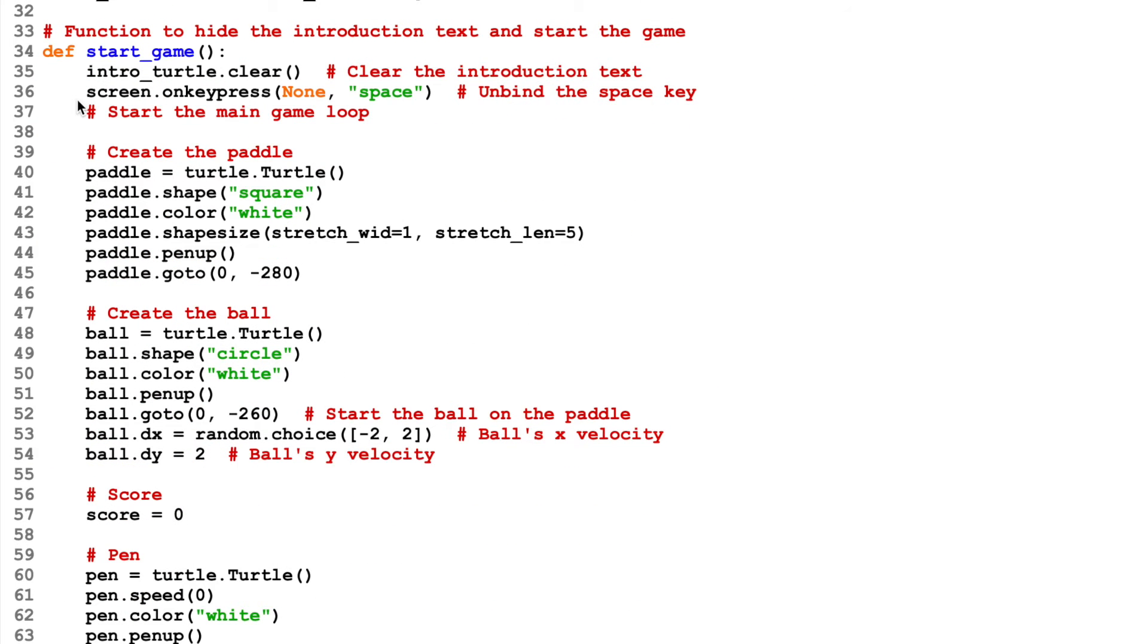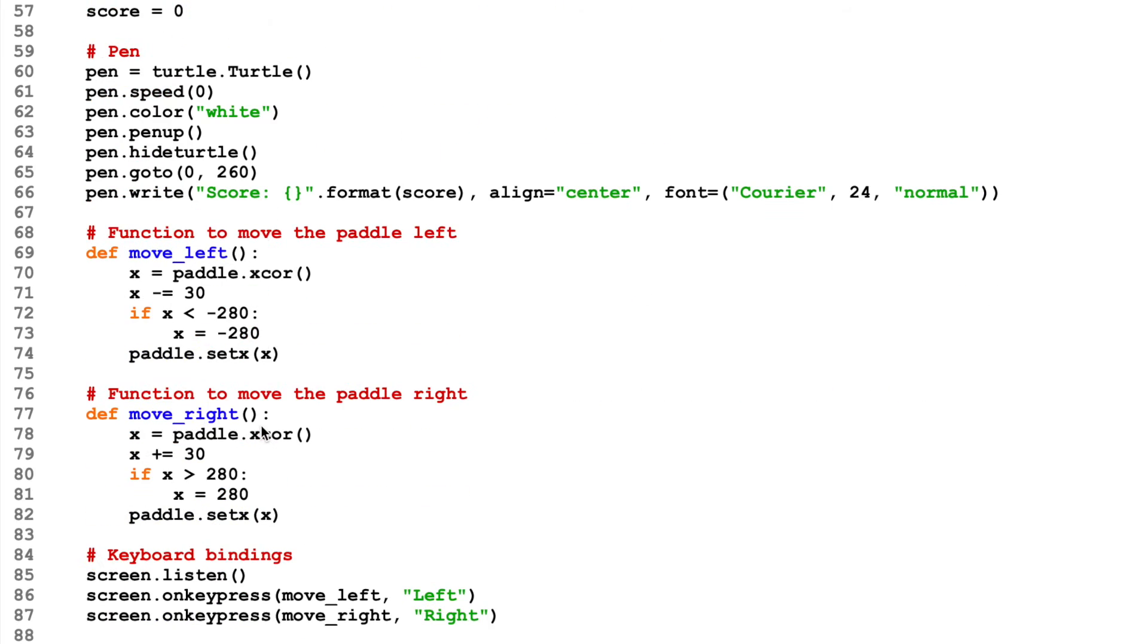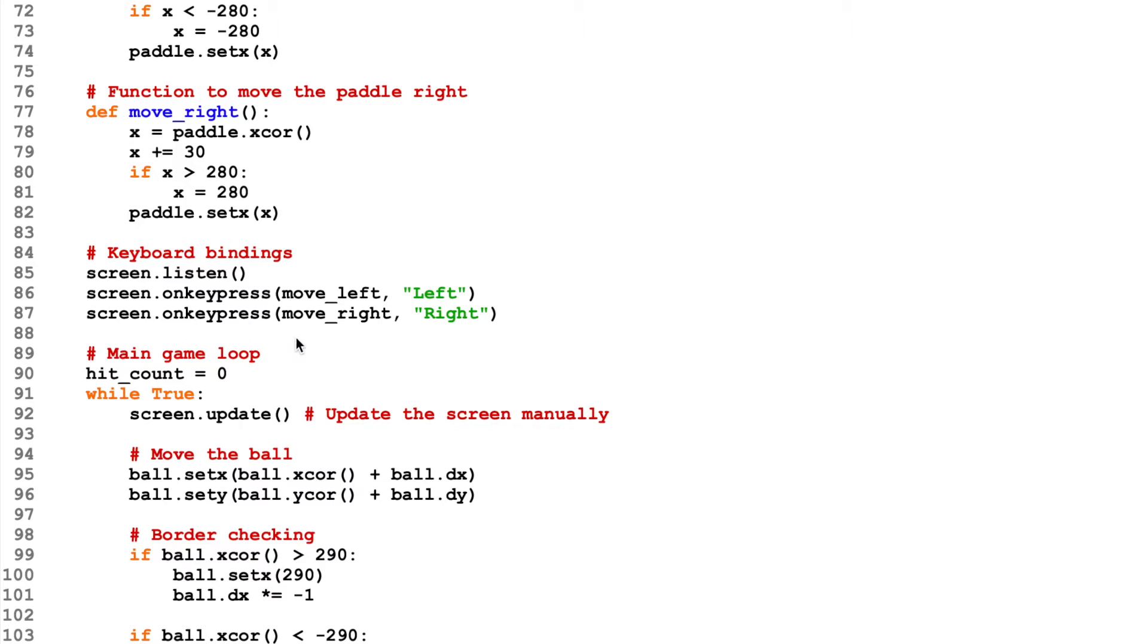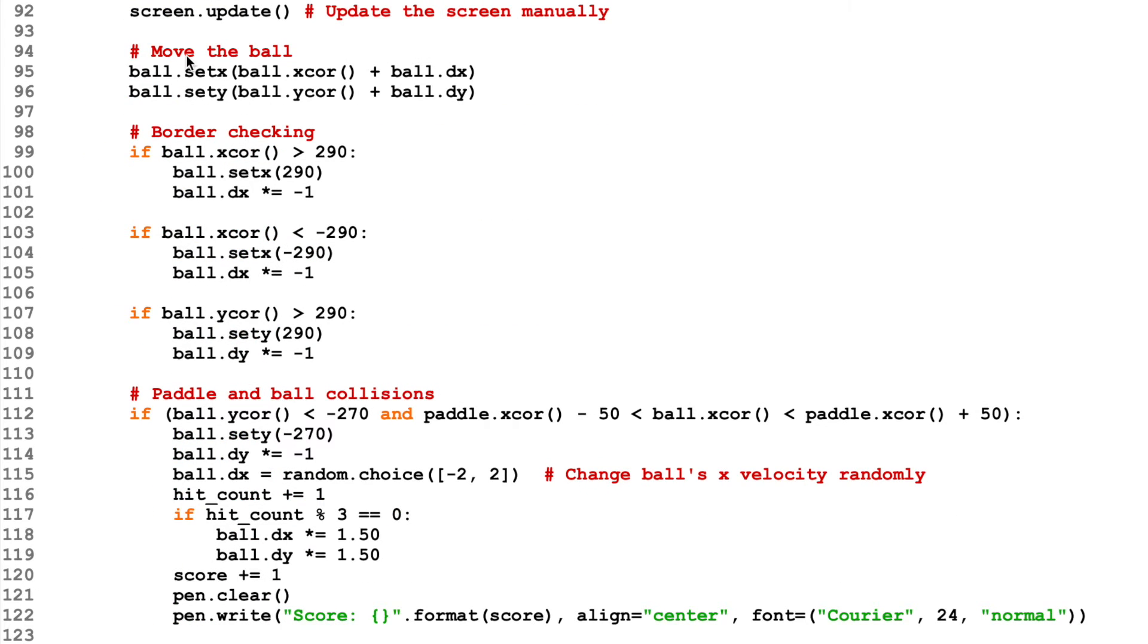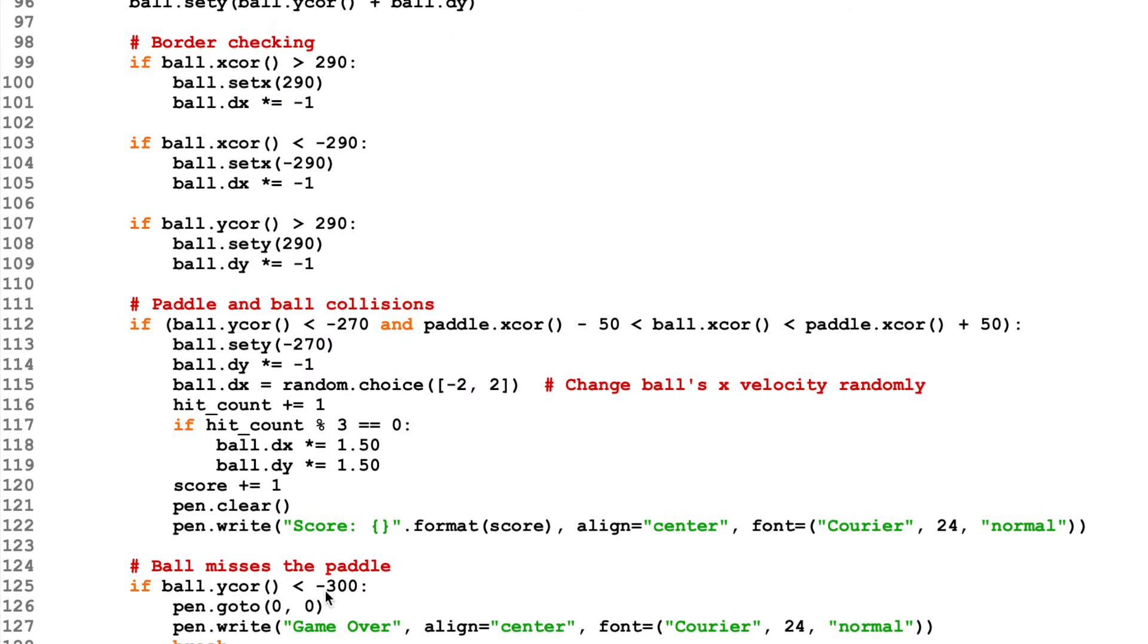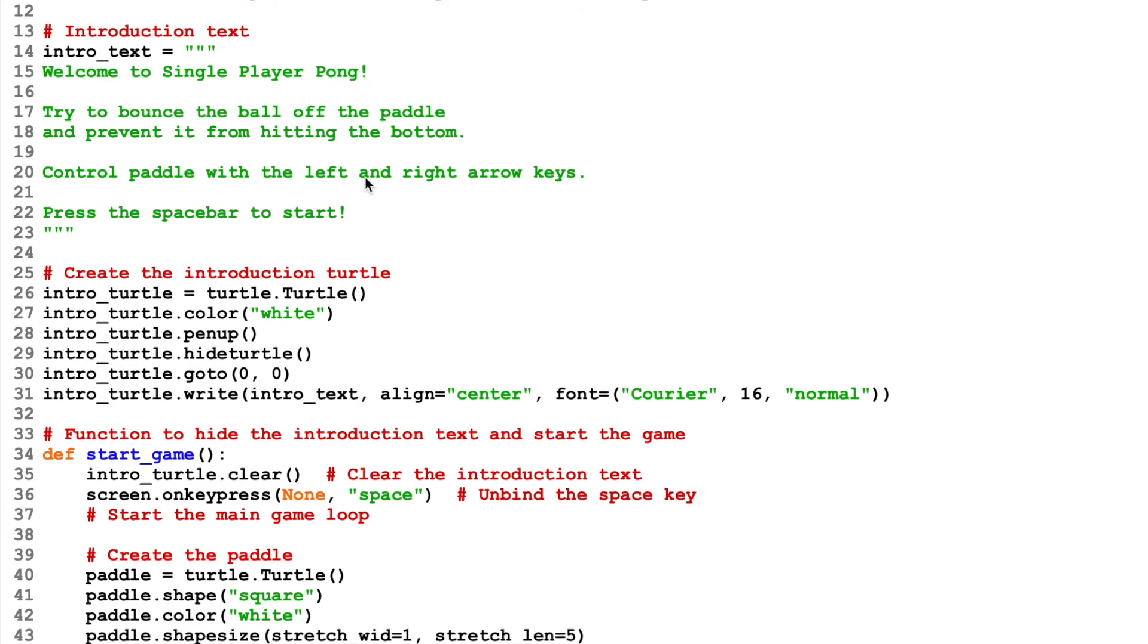We're going to create the introduction using turtle by drawing the elements. We're going to create a function called start game and a function to move the paddles left and right. We're going to attach the keys - left and right keys - to these paddle controls. Then we'll create a main game where we move the ball and set the ball mathematics. We check if there's borders so the ball bounces off the borders of the box. And then if the ball misses the paddle when it reaches the bottom, the game is over.